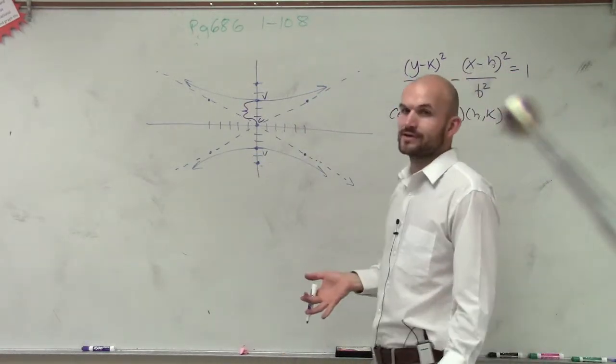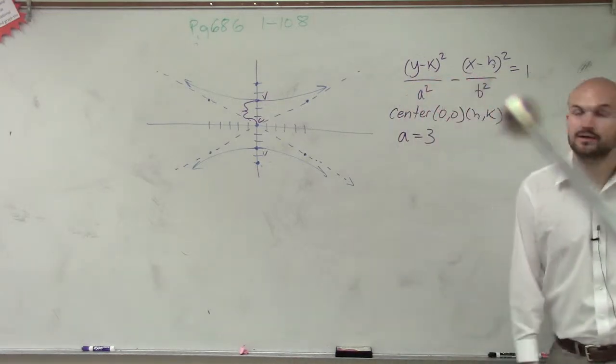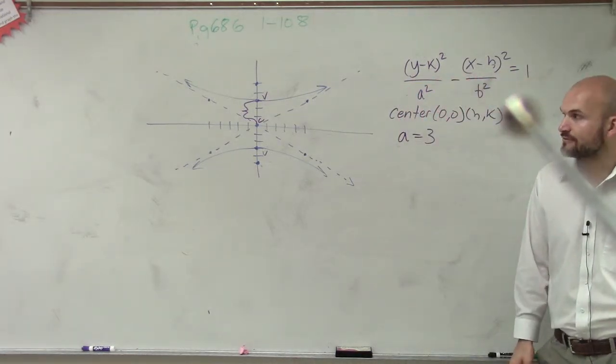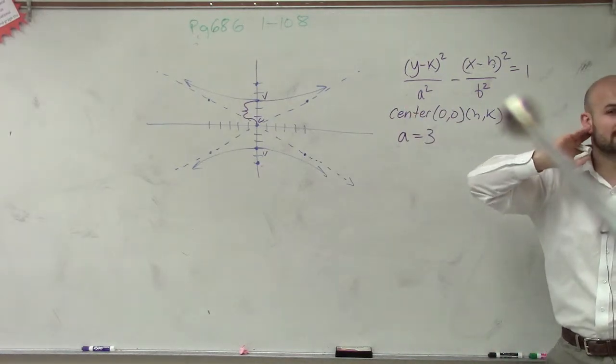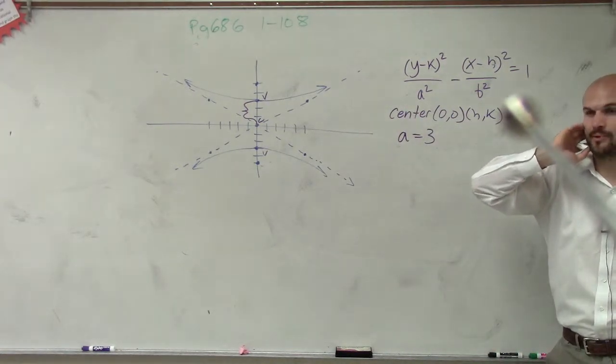Now, b is our co-vertice, and we don't have a value for b here. So we're going to have to do something a little bit different. Now, we don't even have c either, so we don't have the foci for this problem. However, there is something that's important about hyperbolas.